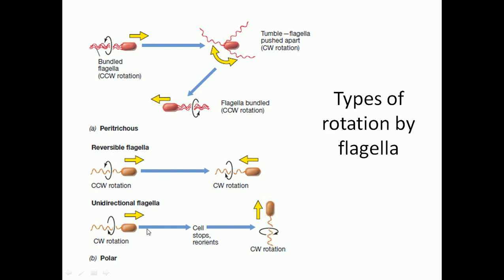For polar flagellar rotation, it can be divided into two types: reversible flagella and unidirectional flagella. Unidirectional flagella can only help a bacteria to move in one particular direction and cannot help the bacteria go in the opposite direction. For example, with unidirectional flagella only clockwise rotation is possible. Due to this clockwise rotation, the bacteria moves left to right, then must stop and reorient its body, and then the clockwise flagellar rotation moves it from bottom to top.